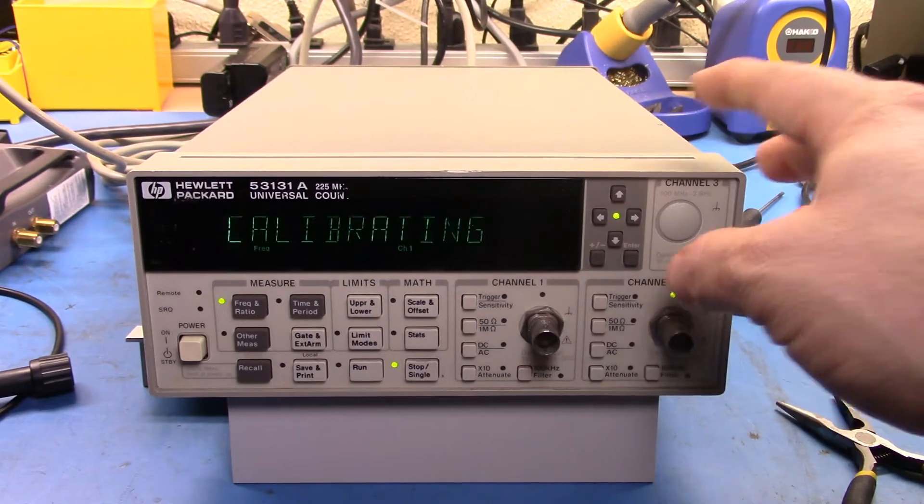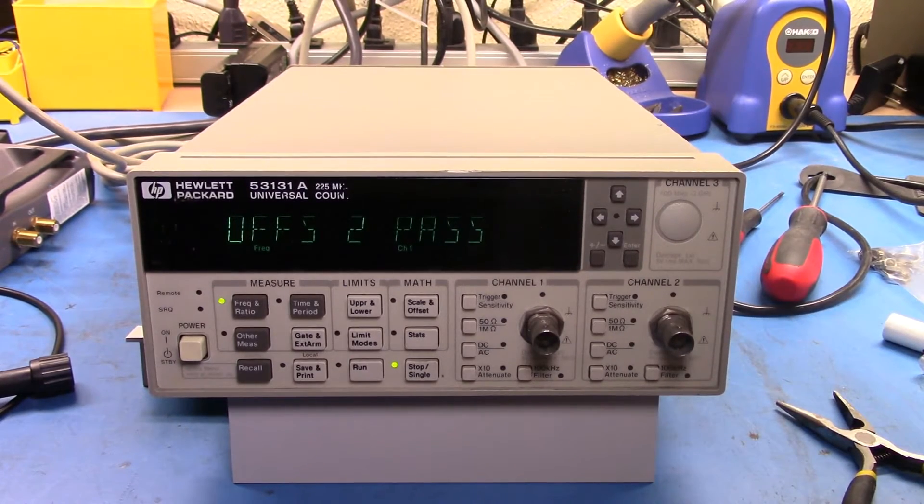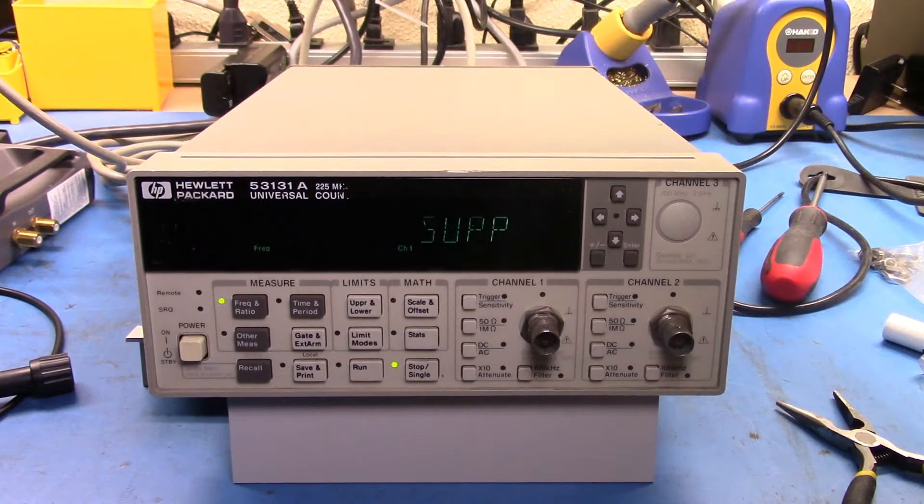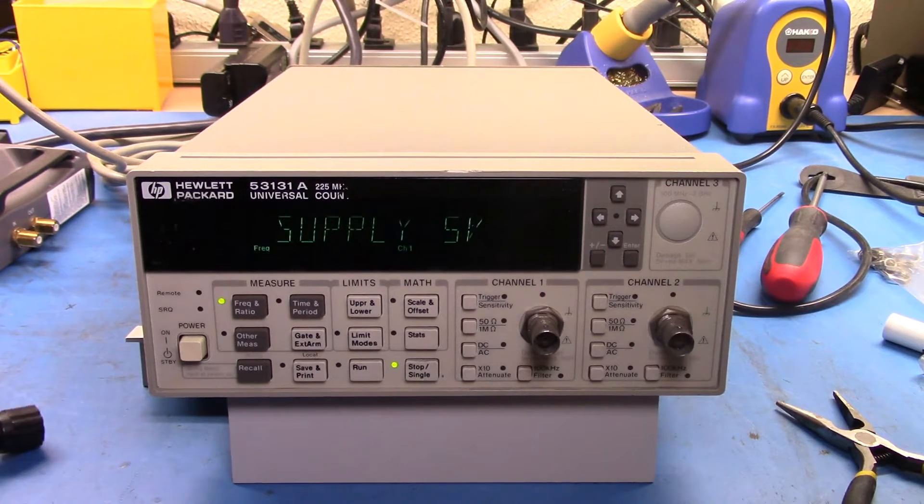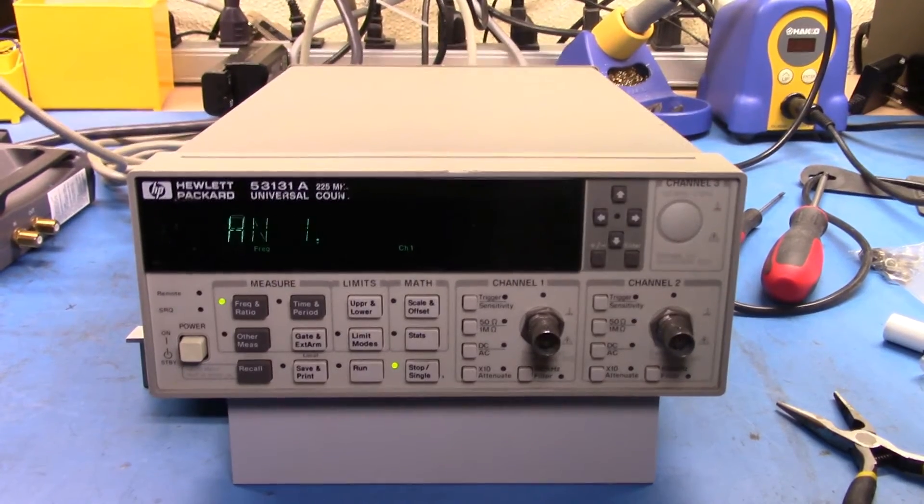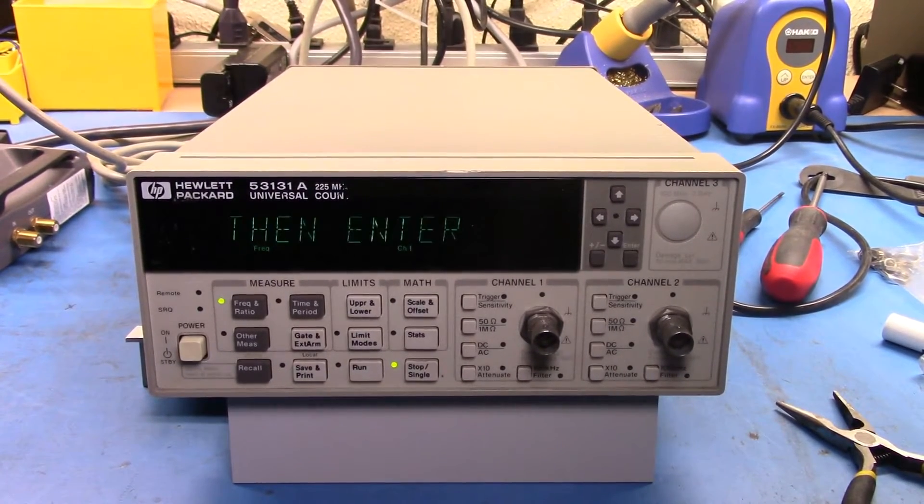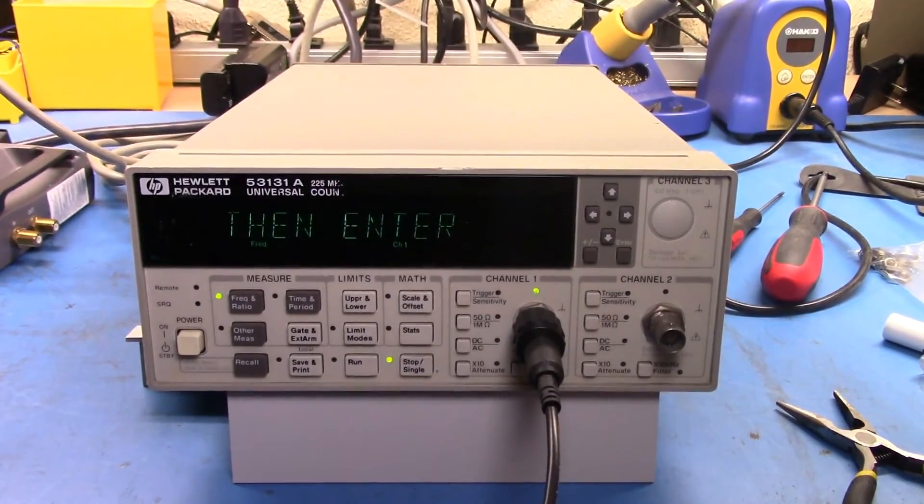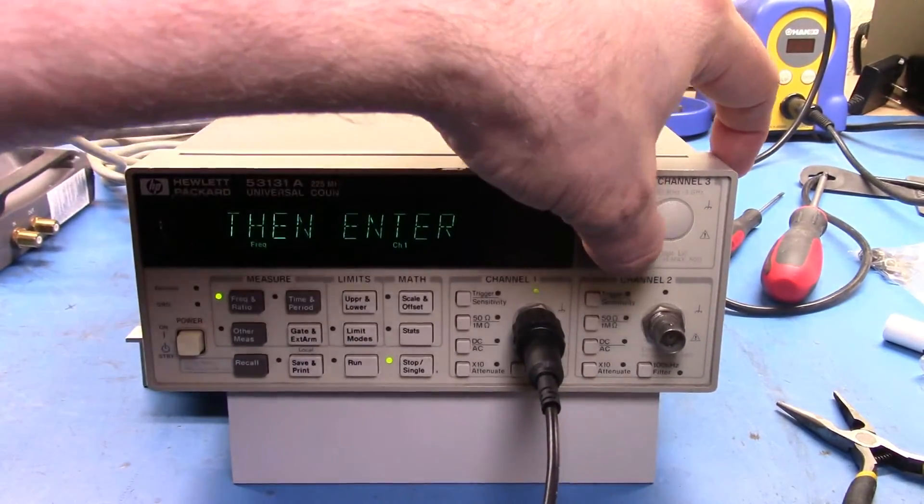So we've passed there. So now it's do gain on 1. And we hit it again. And it's going to tell me to supply 5 volt to channel 1. Okay. So now we have 5 volt set. So we can press enter again.